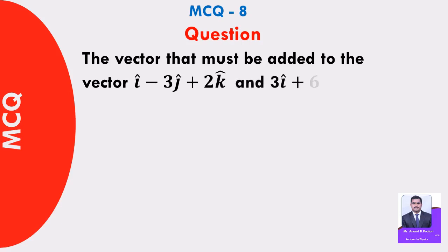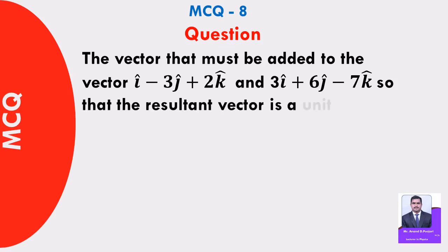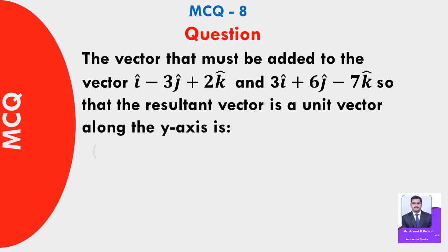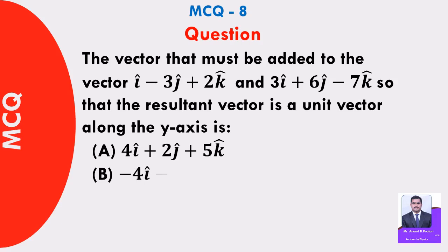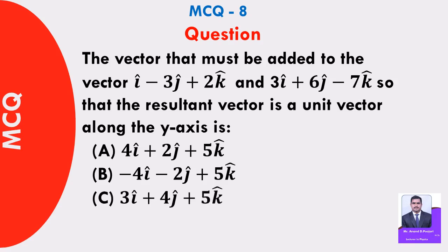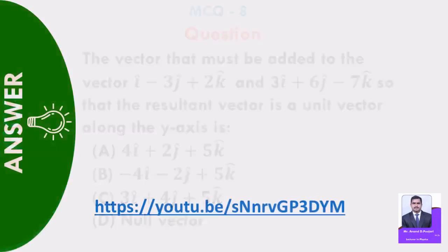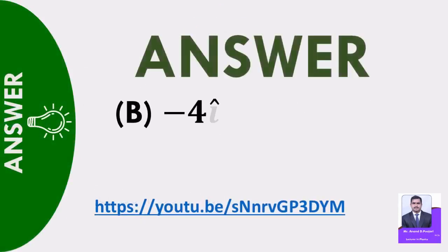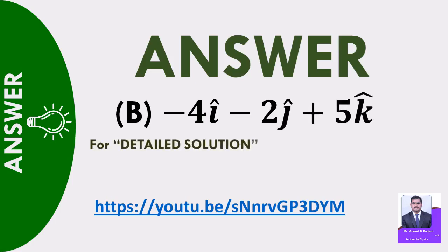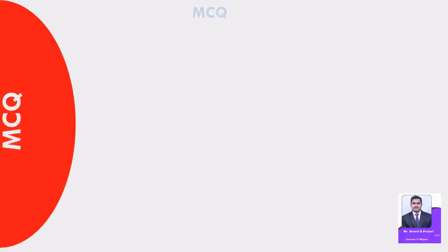MCQ 8: Find the vector to be added to i cap plus 2k cap and 3i cap plus 6j cap minus 7k cap so that the resultant vector is a unit vector along the y-axis. A) 4i cap plus 2j cap plus 5k cap, B) minus 4i cap minus 2j cap plus 5k cap, C) 3i cap plus 4j cap plus 5k cap, D) null vector. Answer: B — minus 4i cap minus 2j cap plus 5k cap. For detailed solution, click the links given in description.